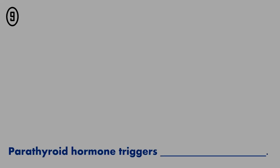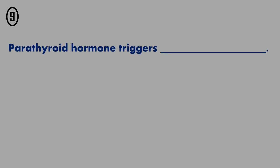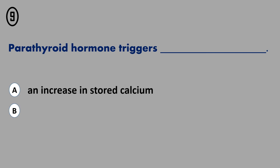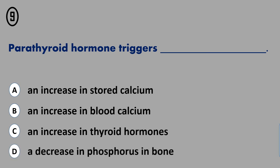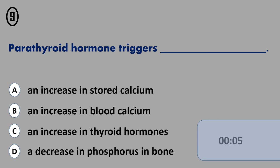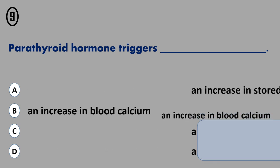Question 9. A. An increase in stored calcium. B. An increase in blood calcium. C. An increase in thyroid hormones. D. A decrease in phosphorus in bone. The correct answer is...